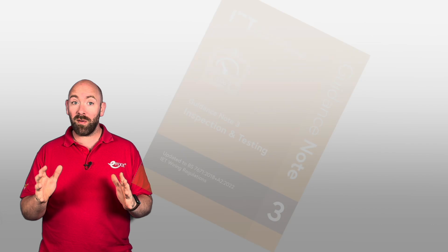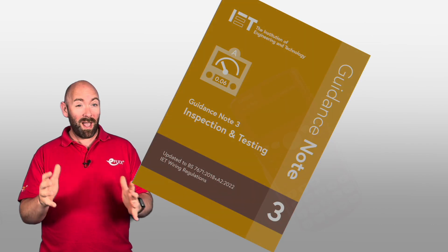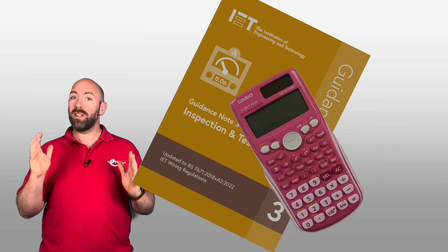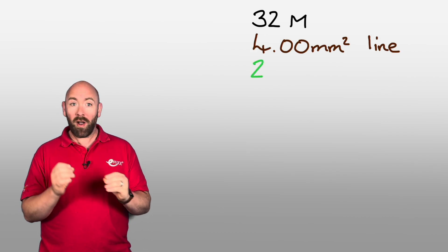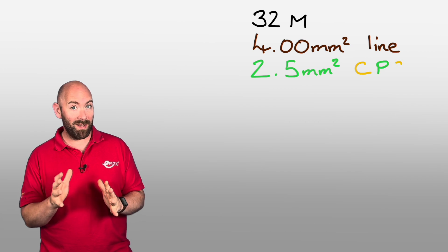So let's start with how we can calculate our expected R1 plus R2 values of an electrical circuit. You will need Guidance Note 3, a calculator, and something to write on. Our circuit is 32 metres in length with a 4 millimetre squared line conductor and a 2.5 millimetre squared CPC.